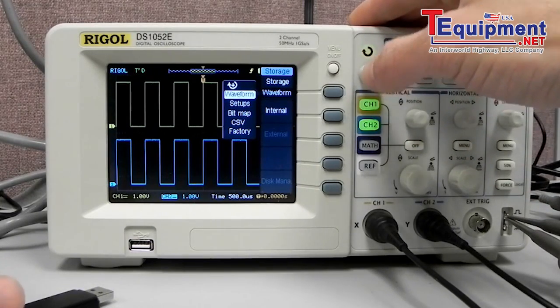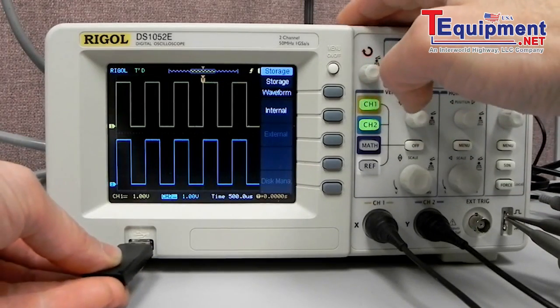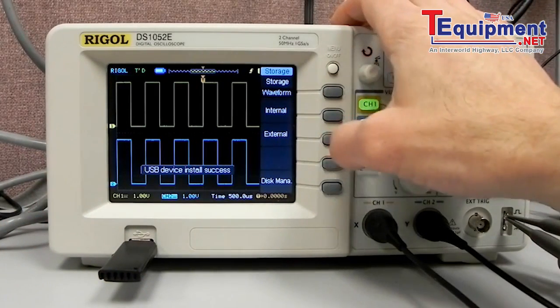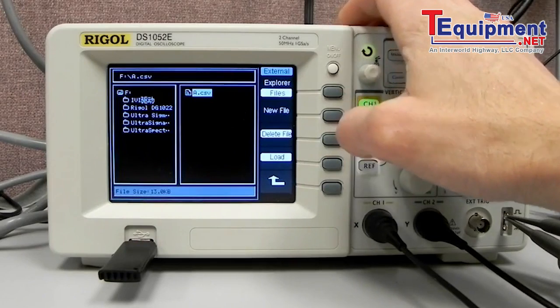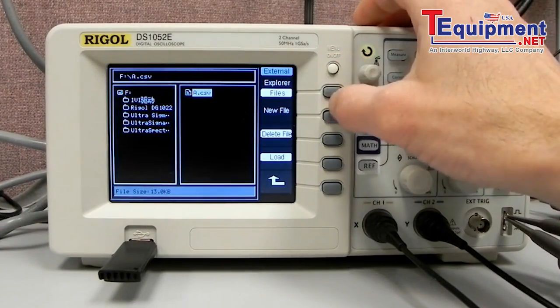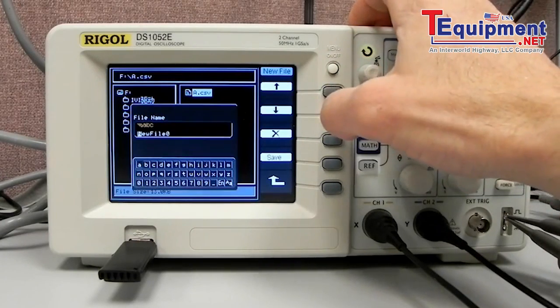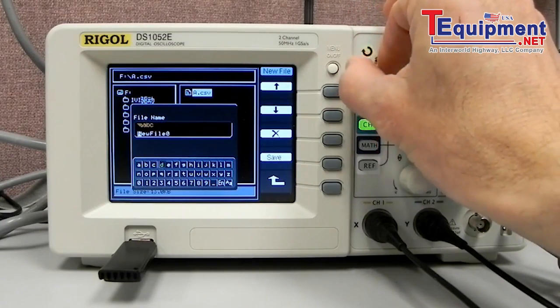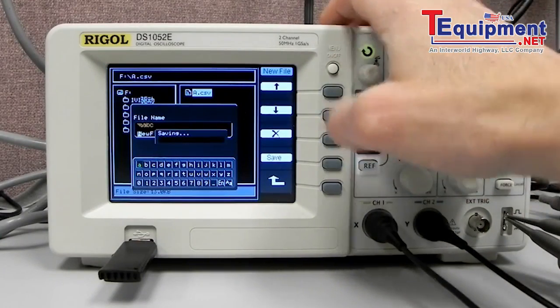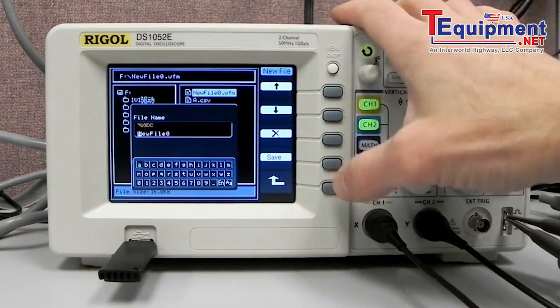Let's say we wanted waveform but then we wanted to save that externally. We can insert a USB stick and now external becomes lit and enabled and we have access to the F drive. We can save that file as a new file. We can also change the name of the file using the rotating scroll and we just hit save.